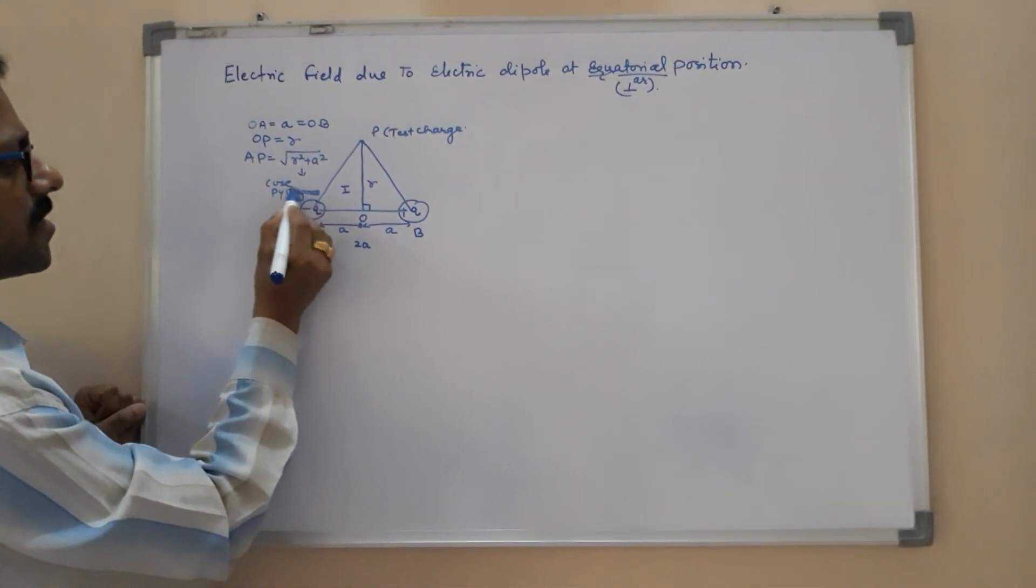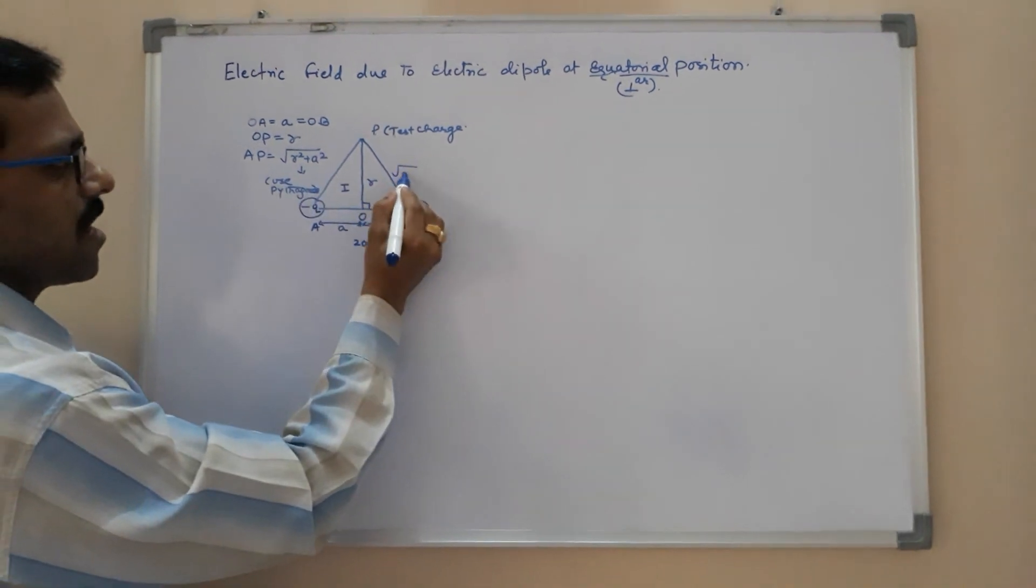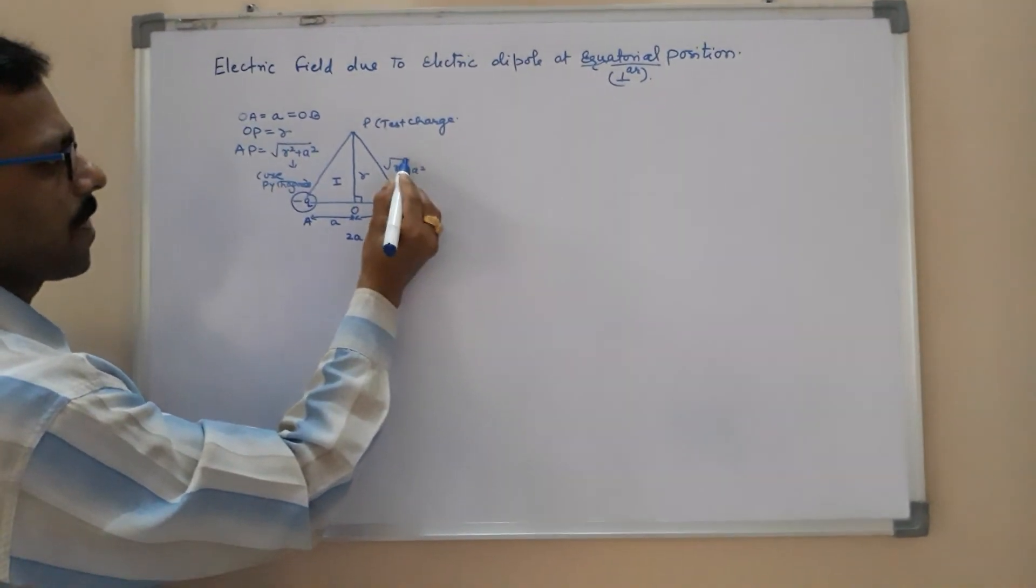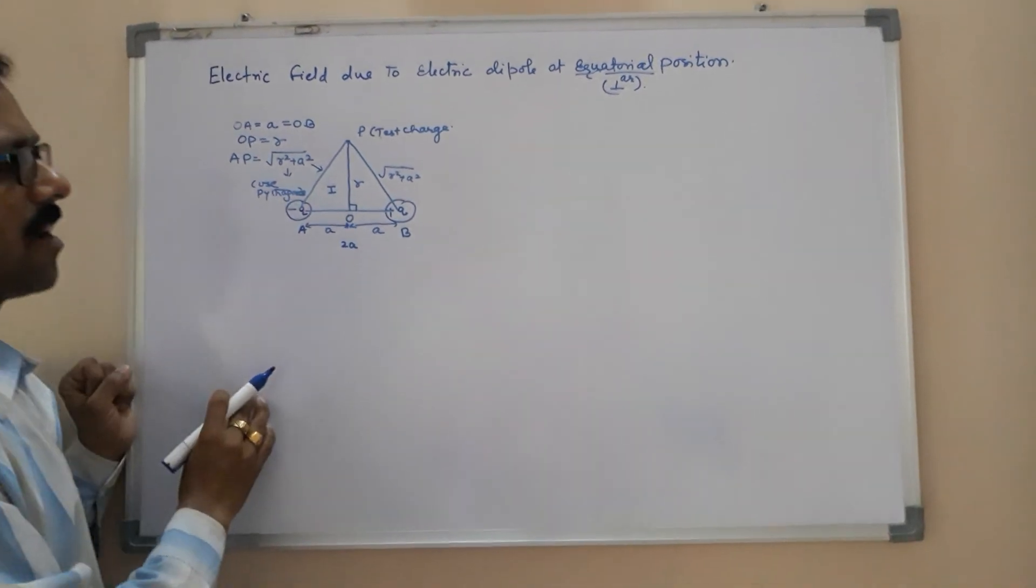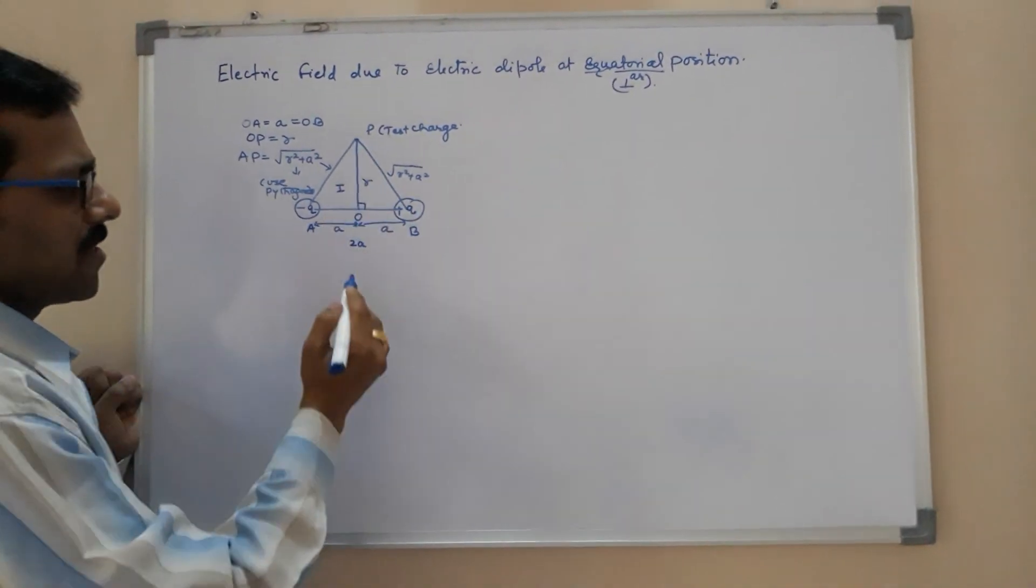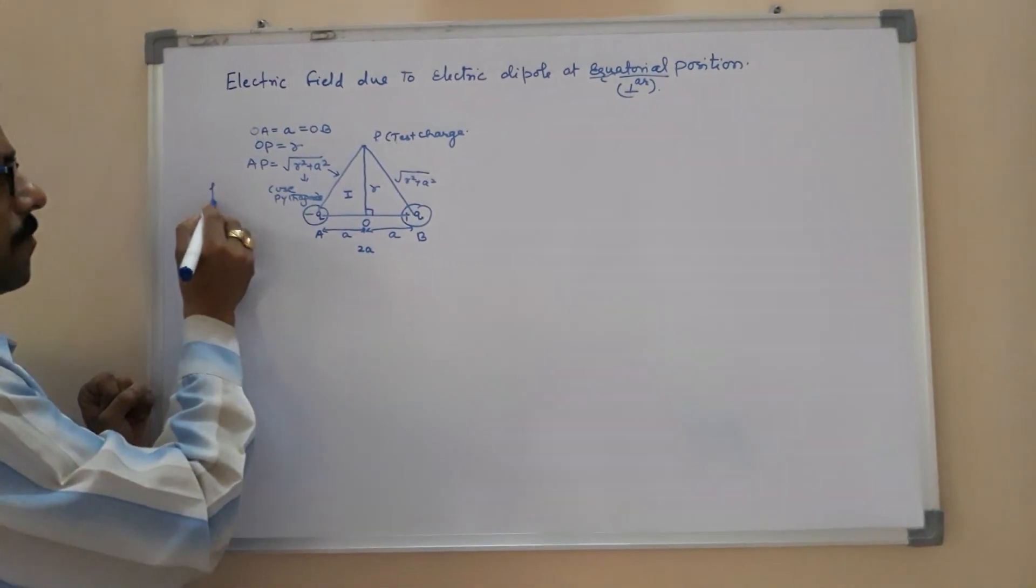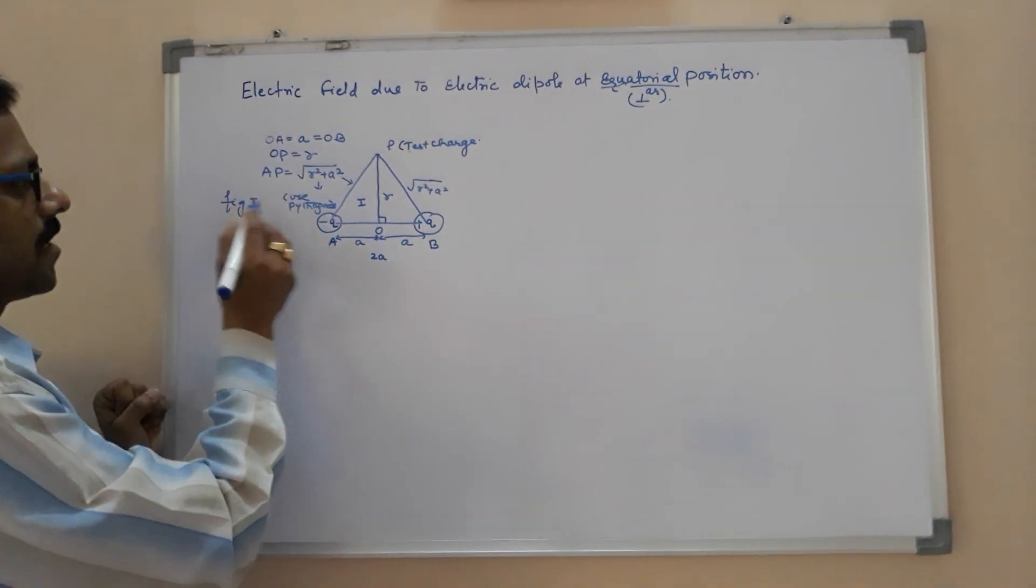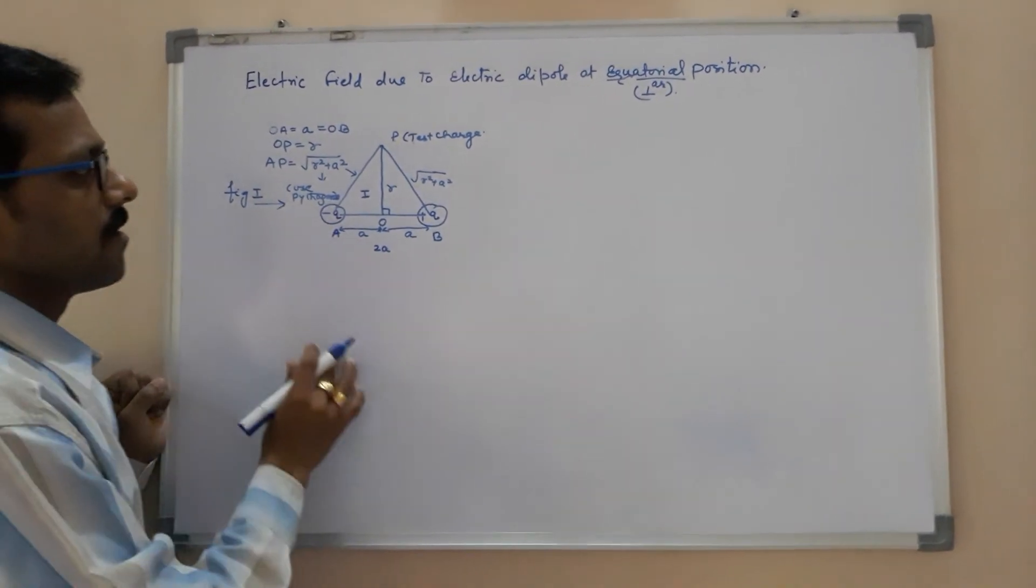Knowing these distances, this I am writing R squared plus A squared, and this is also R squared plus A squared, under root. Now at this point, this is figure 1 to find out the distances.